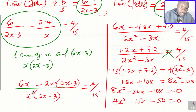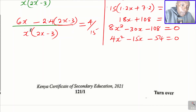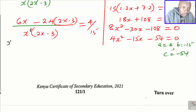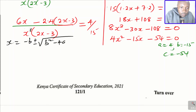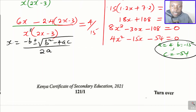This is the quadratic equation we need to solve. The easiest method is the quadratic formula. Here a = 4, b = −15, c = −54. The quadratic formula is x = (−b ± √(b² − 4ac)) / 2a. Substituting these values of a, b, and c into the formula.